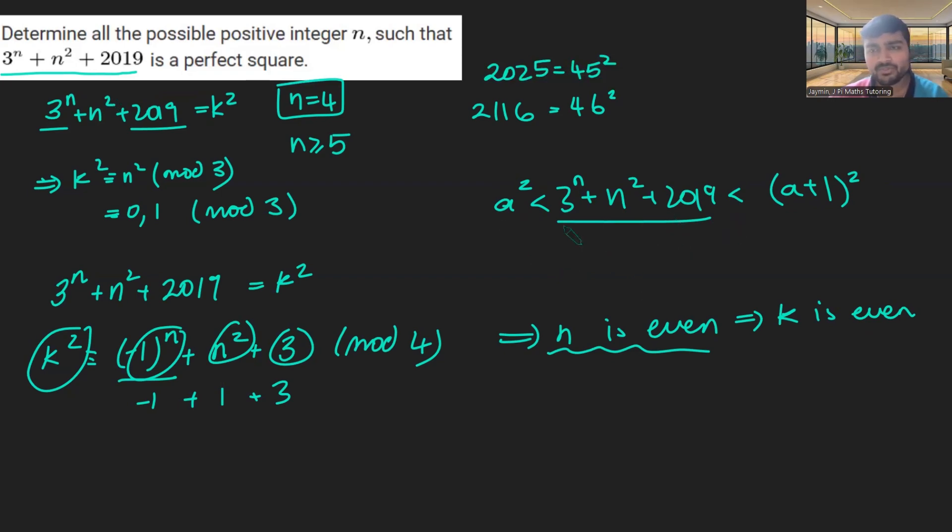So it's going to be a squared is less than 3 to the n plus n squared plus 2019 is less than a plus 1 squared. And we're going to try and find what this a has to be. And if we can show this, that means that this guy here cannot be a square. So this is another technique to solving certain number theory problems. So what could we choose for a? Now, you could think an early contender is n. But the thing is, that won't really be that useful here, because in this expression, 3 to the n is the thing that's causing this to grow most quickly. And so what we need to do is choose a to be based upon this 3 to the n. But conveniently here, we've just worked out that n is even. So what we could use is a equals 3 to the n over 2.